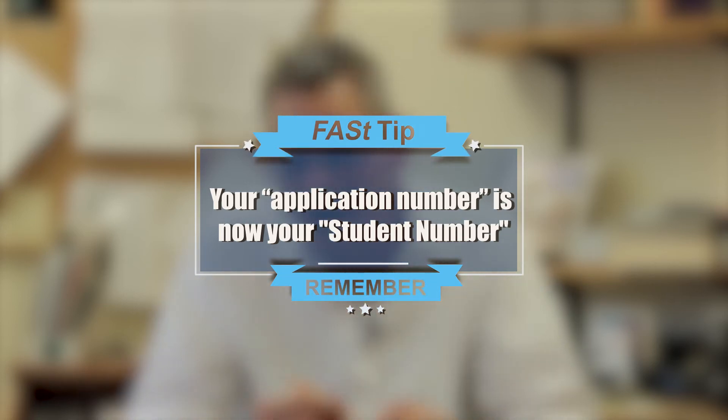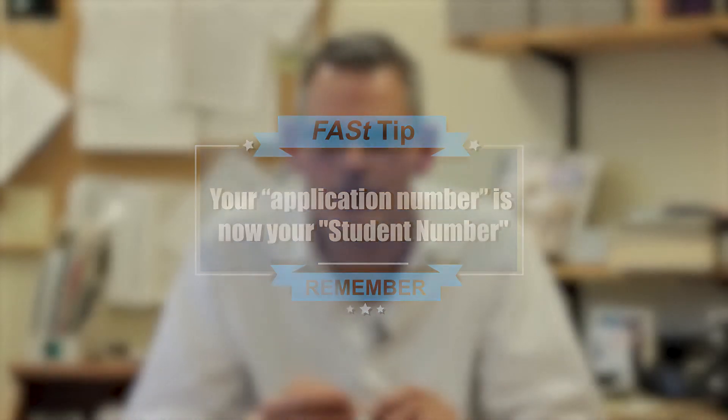Your UTOR ID is the code that you used in order to browse the Join U of T portal. It includes some or all of your last name, perhaps part of the letters of your first name, and perhaps a random number. Once you're an active student in the Faculty of Arts and Science, you'll use your UTOR ID to access course-related web pages and various other web tools.